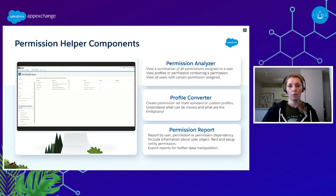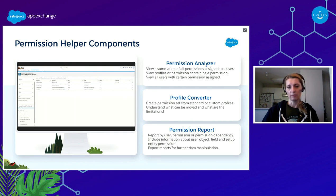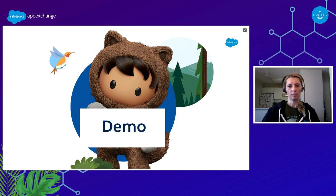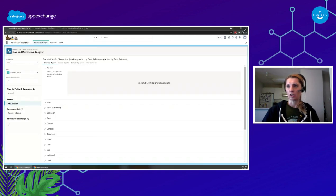Last but not least, we also used Permission Report from Permission Helper. It has the option to report by user permission and permission dependency while providing a lot of detail, including field-level security information. Now let's jump quickly into the demo so you can see Permission Helper in action.